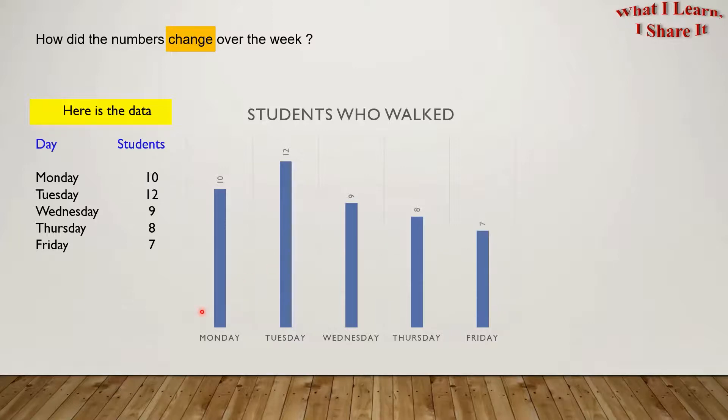Let's do Step 2 which is read the graph and look for a trend. As you can see, from Monday to Tuesday the numbers increased by 2. Tuesday to Wednesday decreased by 3. Wednesday to Thursday decreased by 1. And Thursday to Friday decreased by 1.